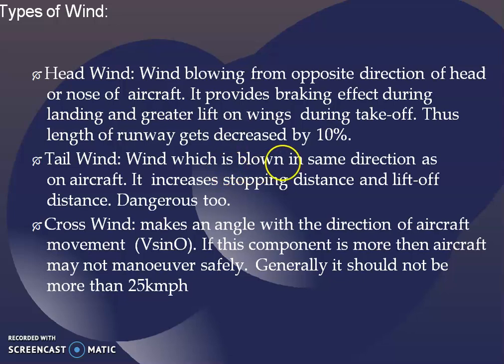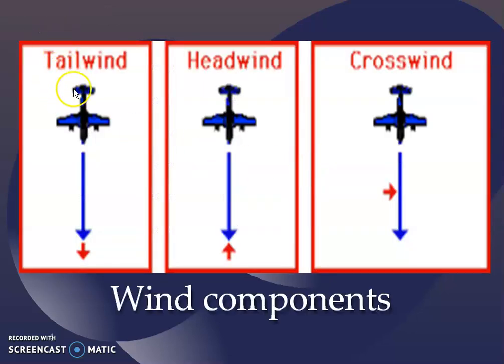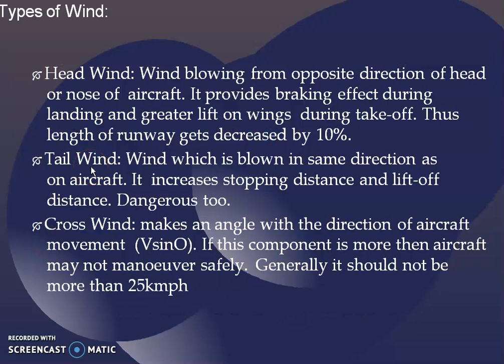Coming to the tailwind, the wind is blown in the same direction as the aircraft. Both the blue color and the red color arrow are pointing in the same direction, so it is moving along the same direction of the aircraft. When the wind is also blowing in the same direction, the stopping distance has to be increased and liftoff distance will also be greater. It is a very dangerous wind. It is called as a tailwind.